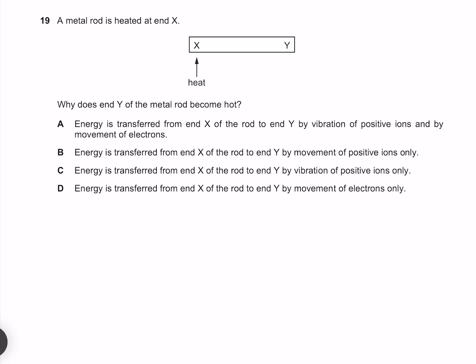A metal rod is heated at end X. Why does end Y of the metal rod become hot? Thermal conduction involves vibration of both the positive ions and also the movement of electrons, not just the positive ions only. Our answer is therefore A.